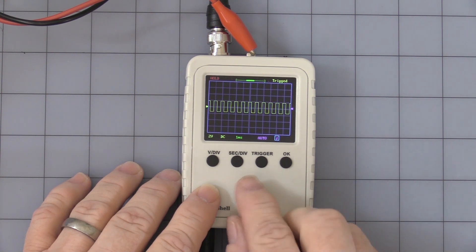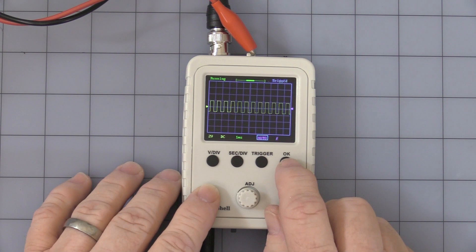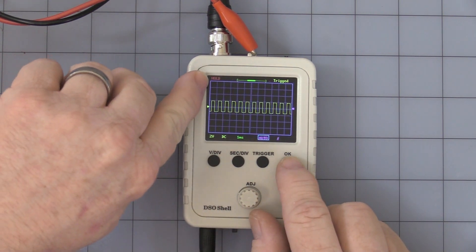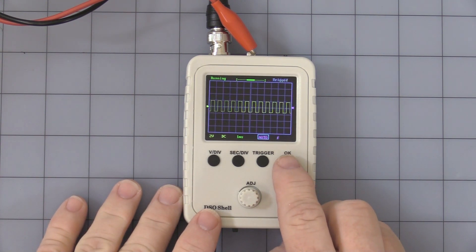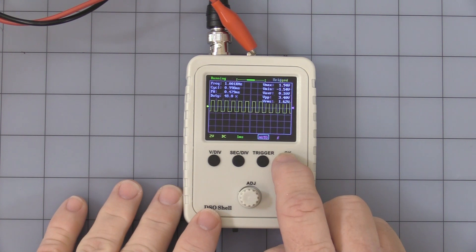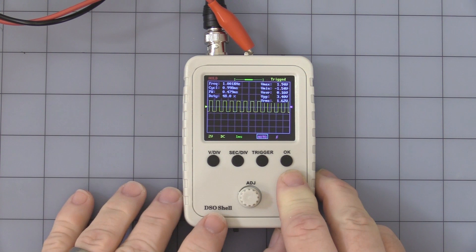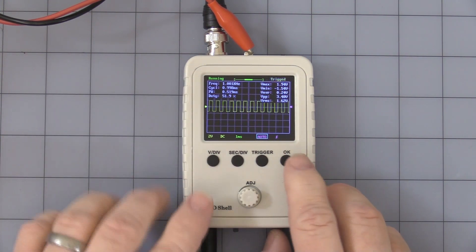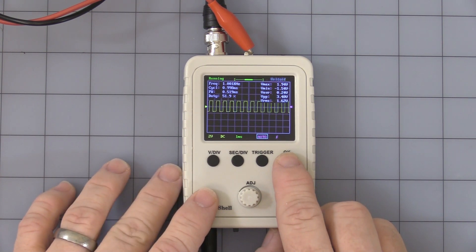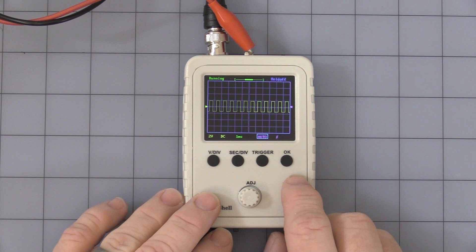Last but not least is OK. That allows you to freeze when it holds the signal, or running. If you press and hold that, it allows you to come up with all the different measurements on the screen. You got to be careful, it's real easy to press and hold again to get those measurements to go away. Now you got to make sure you got it back in the running mode.